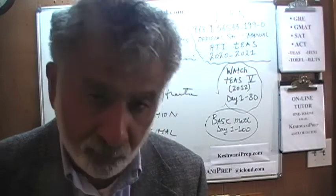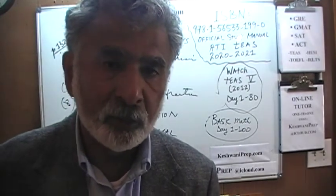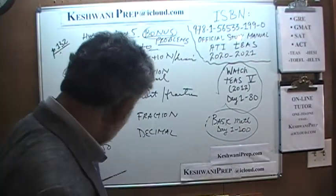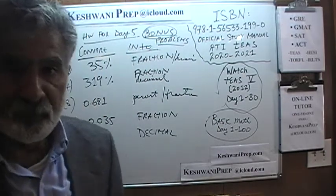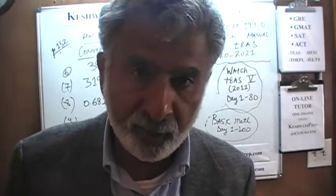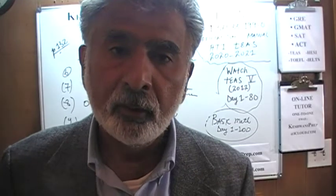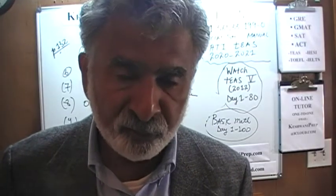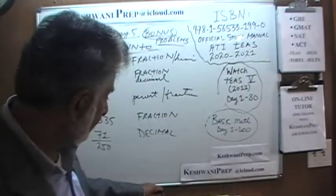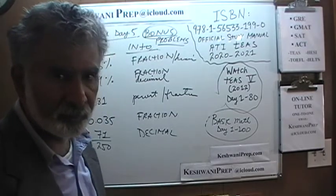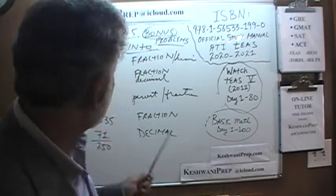On page number 132, the book gives us five problems. We did those five problems the day before yesterday. Yesterday, we did five bonus problems that I had given you for homework the day before. Yesterday, I gave you five more problems — the last batch of five. In other words, all together, there are ten bonus problems.